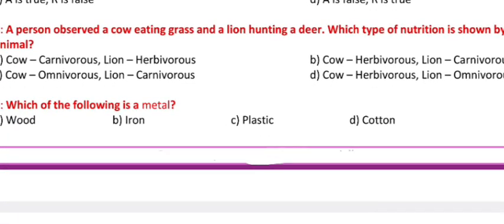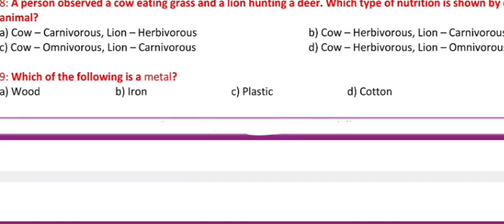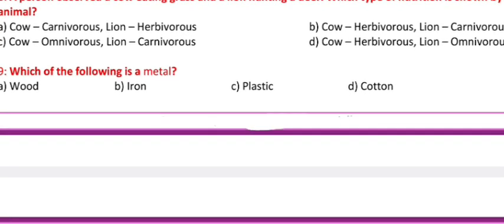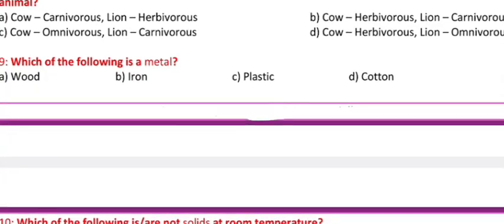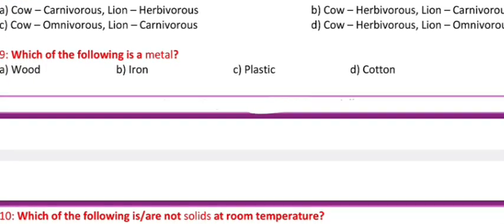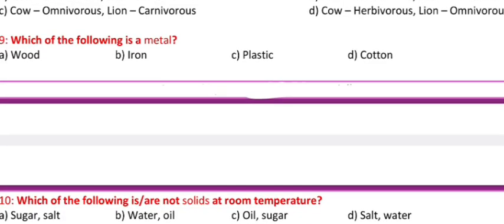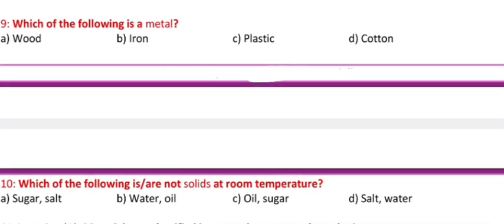Question 8: A person observed a cow eating grass and a lion hunting a deer. Which type of nutrition is shown by each animal? Here A, B, C, D are the four options given. Which one is correct? You can select and write in the space provided for it.